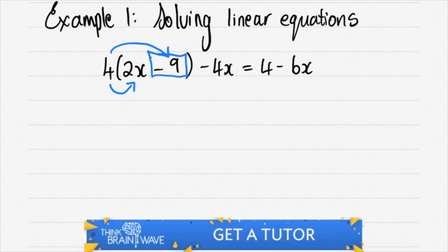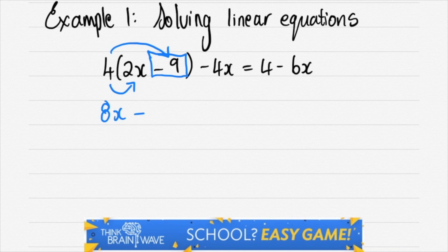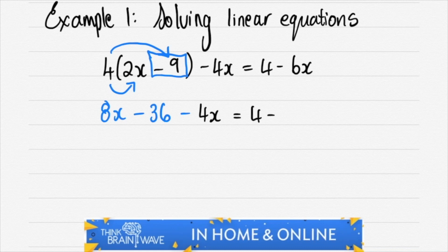So we work with our 4 on the outside of the brackets. We multiply in, 4 times 2x is 8x, 4 times minus 9 is minus 36. We carry the minus 4x and we leave the right hand side as it is.